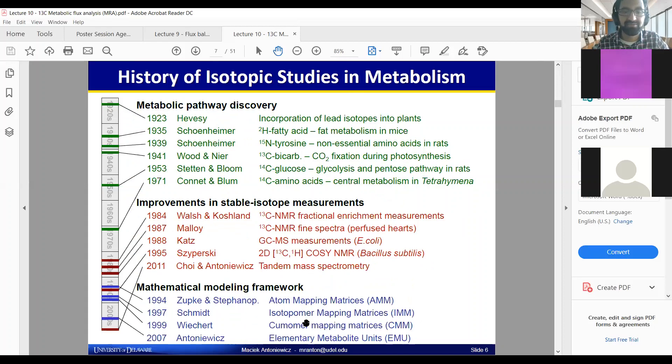More recently, but still starting in the 80s, you had more technique-oriented measurement improvements. This has to do with 13C NMR, GCMS, tandem mass spec, and then the modeling that's associated with processing all this information.